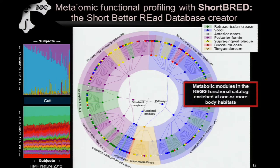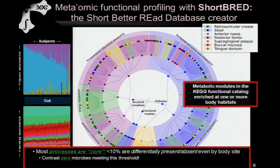Each dot around the outside of this circle represents a single metabolic module from the KEGG catalog, colored if it is significantly enriched in at least one body site. About two-thirds of the pathways we analyzed in the HMP were enriched or depleted among the seven habitats. However, it was very rare to entirely lose a process from the community metagenome — less than 10 percent were actually lost from the metagenome in any particular body site or individual — whereas no microbes meet that level of coreness between individuals or body habitats.